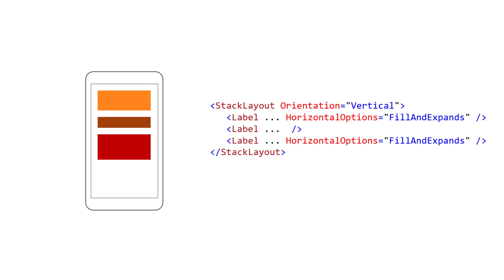The extra space is then divided evenly among all the children that asked for expansion. There's no way to divide this space differently — each expanded child gets an equal share. Keep in mind, the Stack Layout itself is not expanding here; it's the space allocated to those children. Additionally, Stack Layout expands children only in the direction of its orientation. Children already receive the full size of a Stack Layout in the opposite direction. A vertical Stack Layout expands in the vertical direction, and a horizontal Stack Layout expands in the horizontal direction.